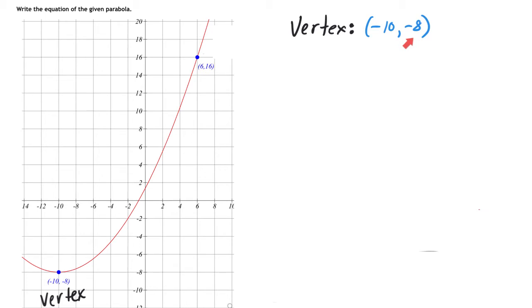Then from there you want to write the equation of a parabola as best you can, and you just won't know the stretch factor. So we'll write it out like this: y equals a times x plus 10 squared minus 8. Notice I said x plus 10 squared.